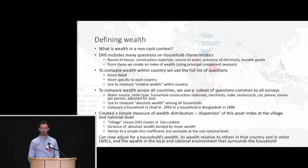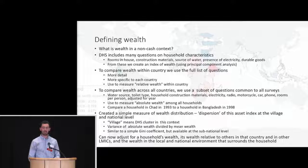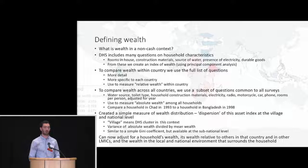If I'm going to look at the relationship between wealth and child mortality, I need to define what wealth means. The first measure is defining a household's wealth relative to peers in the country, which is commonly done with an asset index. In contexts where there's not a lot of cash exchanged or people don't have salaries, the DHS asks questions about durable goods, roof material, number of rooms, electricity, water source, and similar things. People then collapse that down into a single variable using principal components analysis or factor analysis, which is useful for comparing household wealth to peers in the same country.